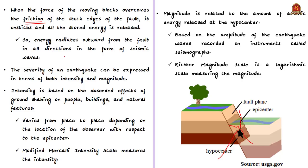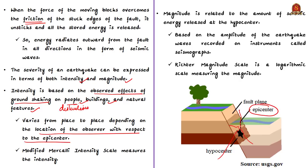How are earthquakes measured? The severity of an earthquake can be expressed in terms of both intensity and magnitude. Intensity is based on observed effects of ground shaking on people, buildings, and natural features — essentially how much destruction it has caused on the earth's surface. It varies from place to place depending on the observer's location relative to the epicenter, and is measured by the Modified Mercalli Intensity Scale. Magnitude is about the amount of seismic energy released at the hypocenter, based on the amplitude of earthquake waves recorded on instruments called seismographs. Magnitude is measured using the Richter scale — what we often see in news as a Richter 7.0 or 6.0 earthquake.